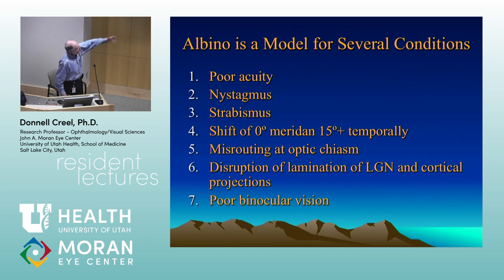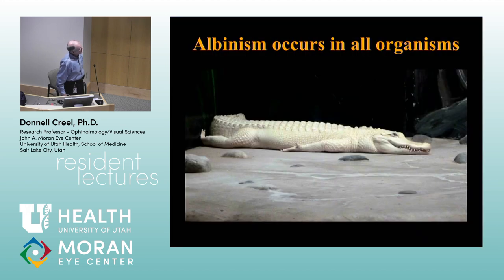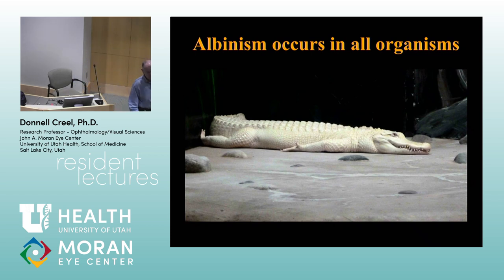The albino is the model for all of these various conditions. Albinism occurs in all organisms from fruit flies to humans. Here's a really big alligator — there's a private zoo outside of Phoenix with almost as many animals as the Hogle Zoo, and this albino alligator is almost as long as two tables.